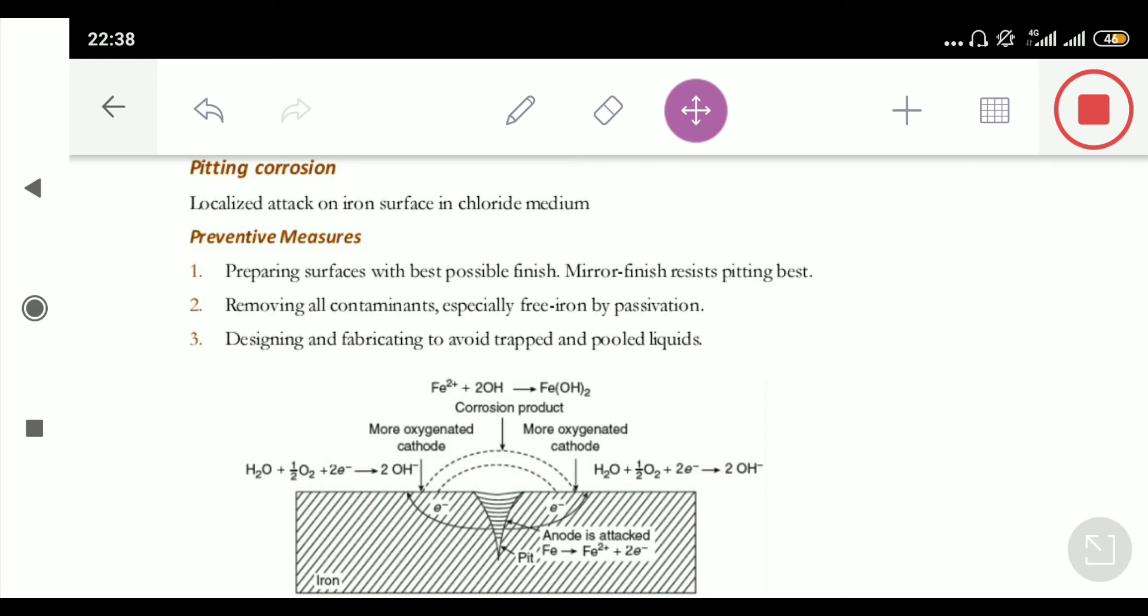Right. So, in that trough or in that pit, in that pit, you can see, I mean, this part, right, this is a pit. So, since, and this pit is also occupied by some dust or maybe some chloride impurities. In fact, chloride impurities is responsible for this kind of corrosion.